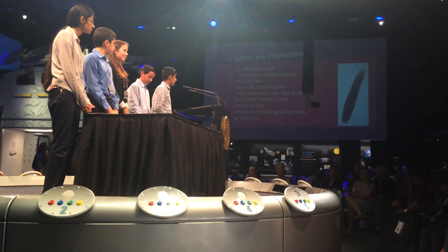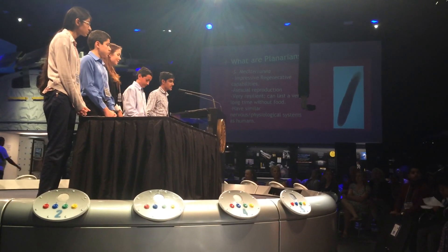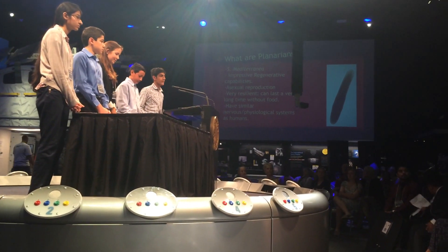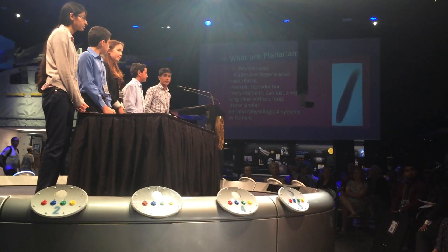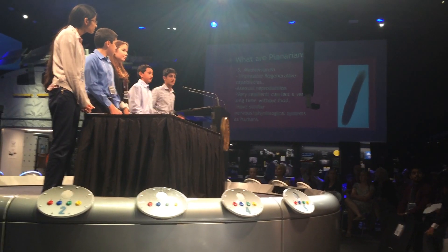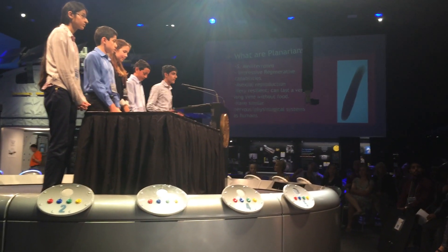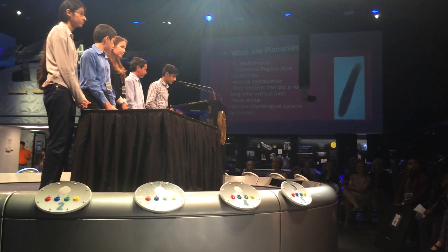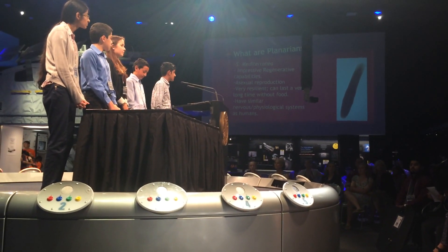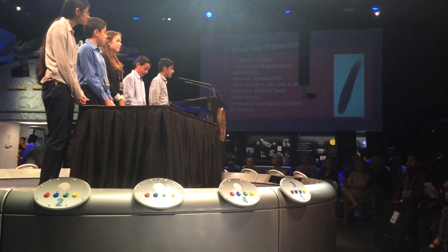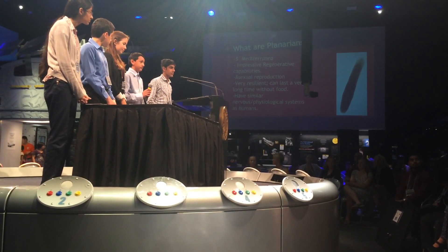Asexual reproduction is a process in which planarians divide when there is a low density of planaria in their habitat. When planarians are deprived of food, they proportionally decrease in size without disrupting natural processes, allowing planarians to survive for extended periods without food. They also have very similar nervous and physiological systems to that of humans, making them very important creatures.